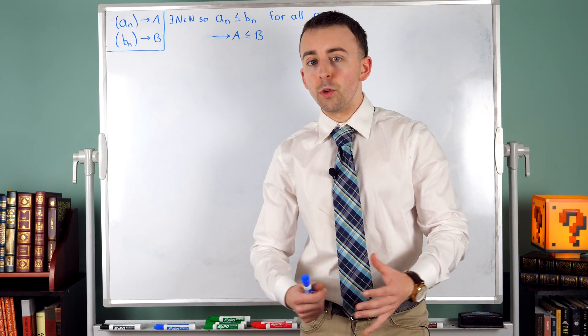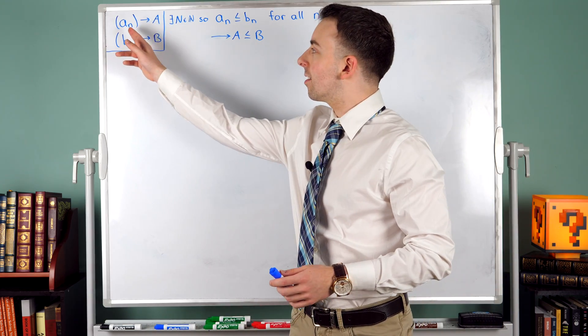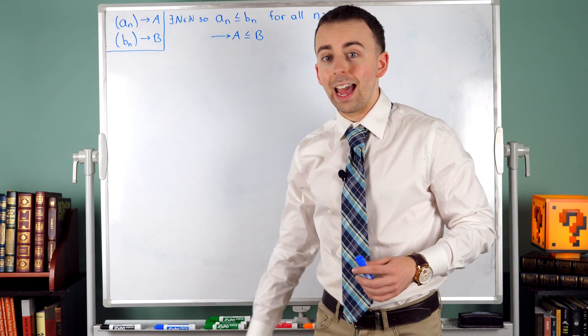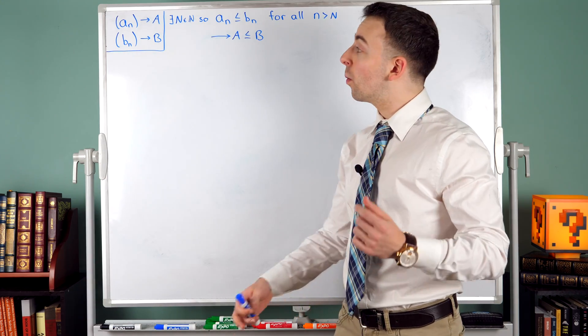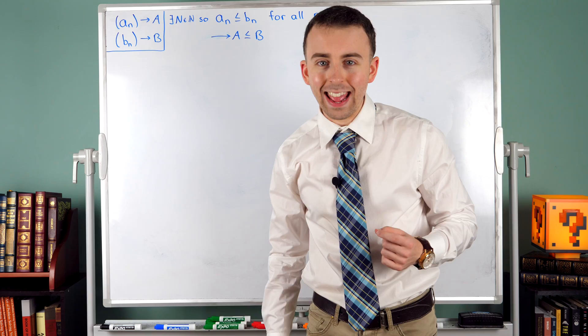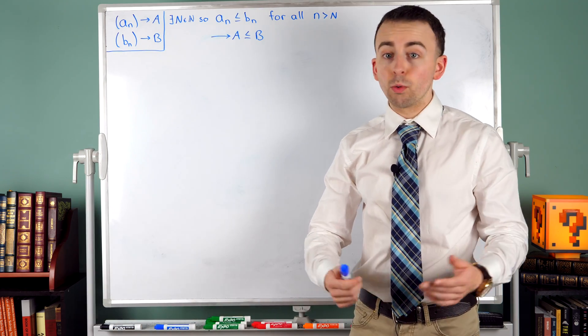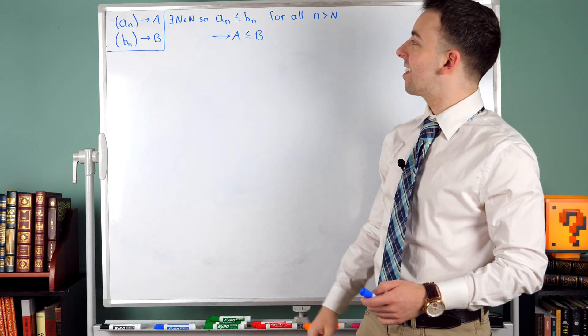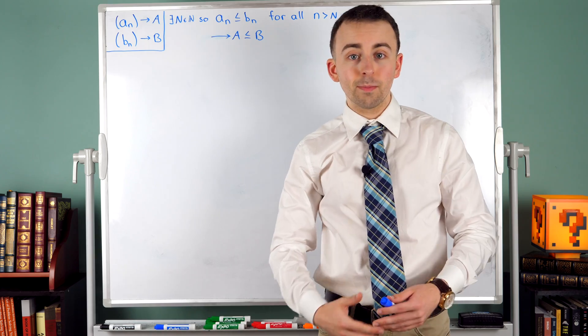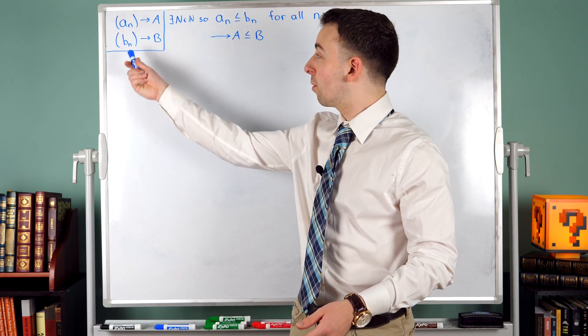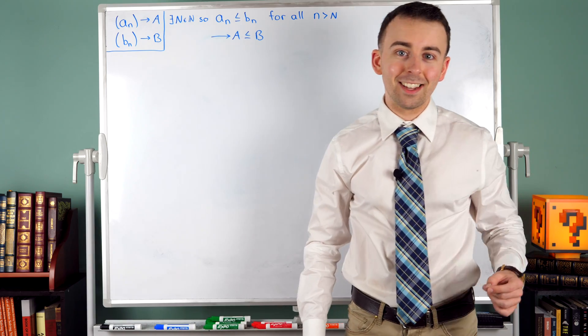One of the laws we proved in that lesson is that if we have two convergent sequences, say An converging to A and Bn converging to B, and we know that every term of An is less than or equal to every term of Bn, then as we would expect, A is less than or equal to B. So if every term of a convergent sequence is less than or equal to every term of some other convergent sequence, then their limits are related in that same way.